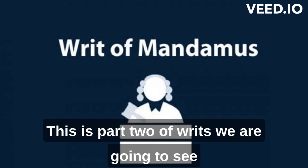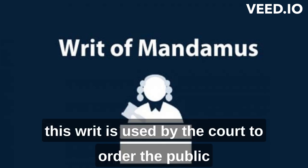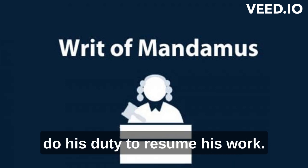This is part two of writs. We are going to see about mandamus. The literal meaning of this writ is 'we command.' This writ is used by the court to order the public official who has failed to perform his duty, or refuses to do his duty, to resume his work.